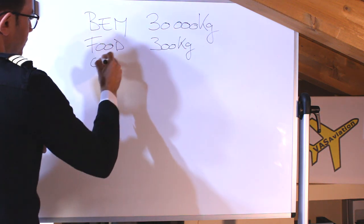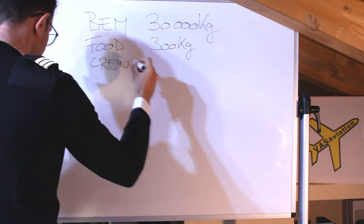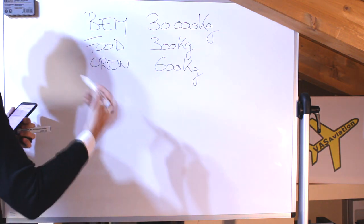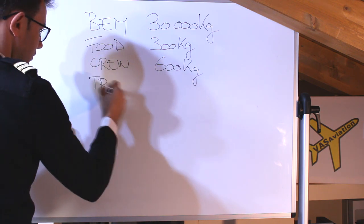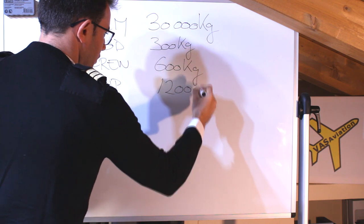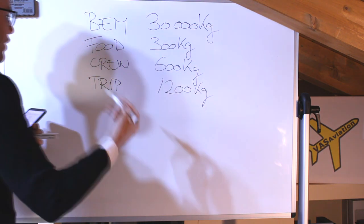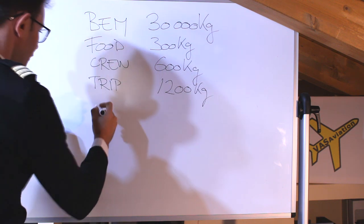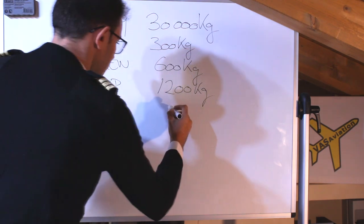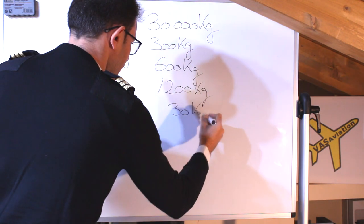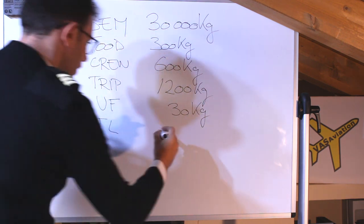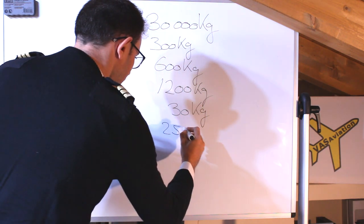The crew is 600 kilos. The trip fuel is 1,200 kilos. The unusable fuel is 30 kilos. The traffic load is 2,500 kilos. They are asking: what is the dry operating mass?